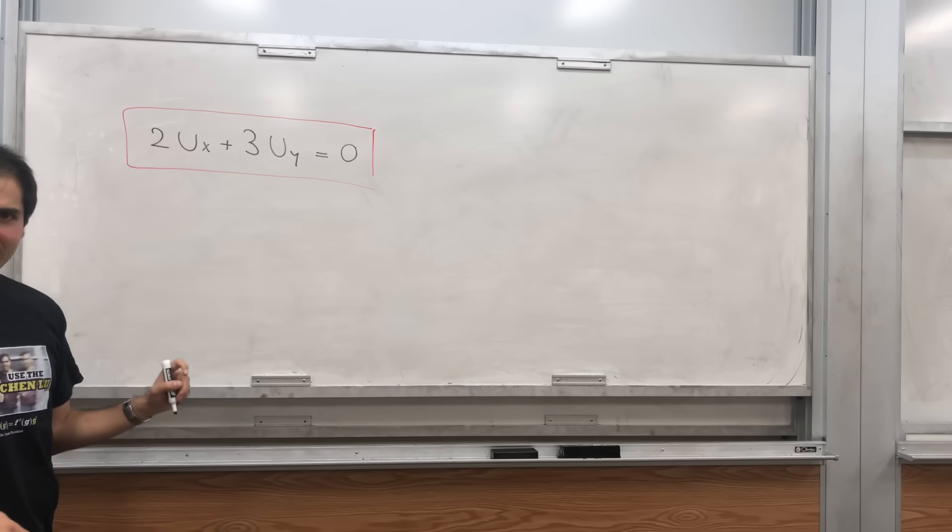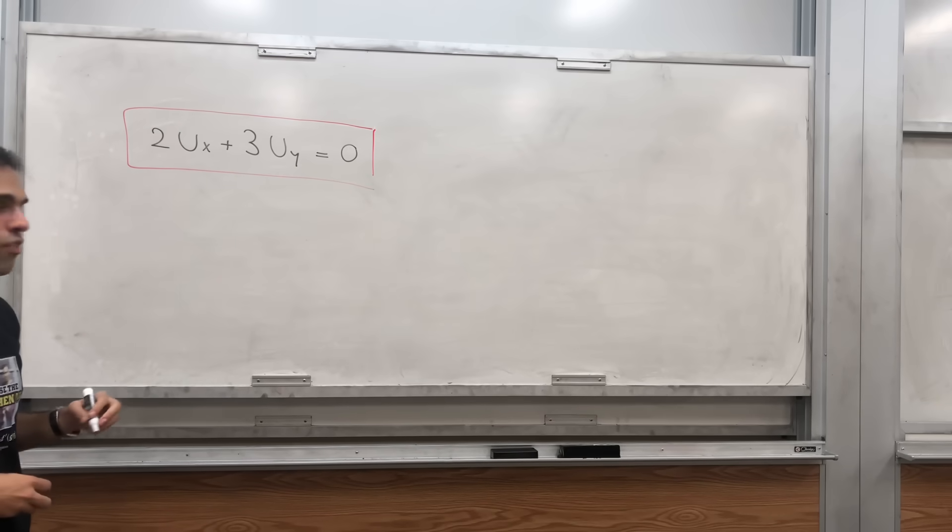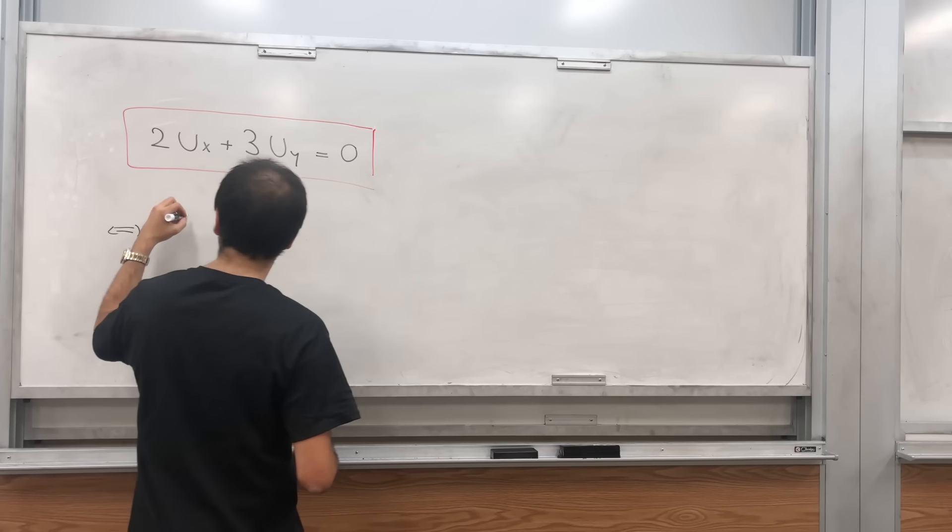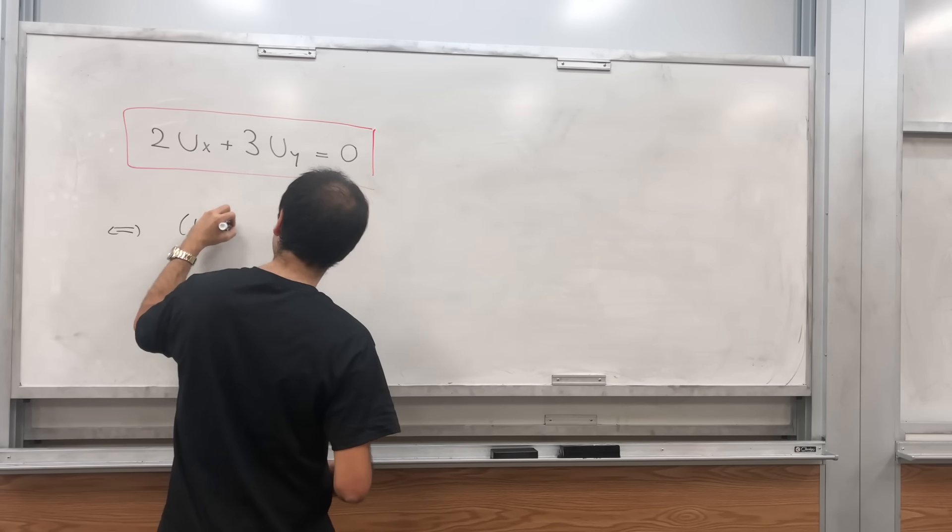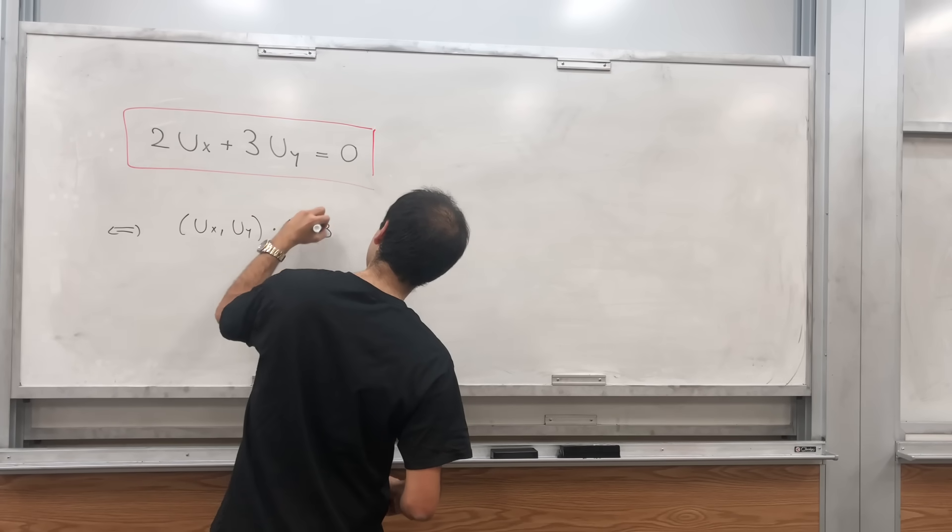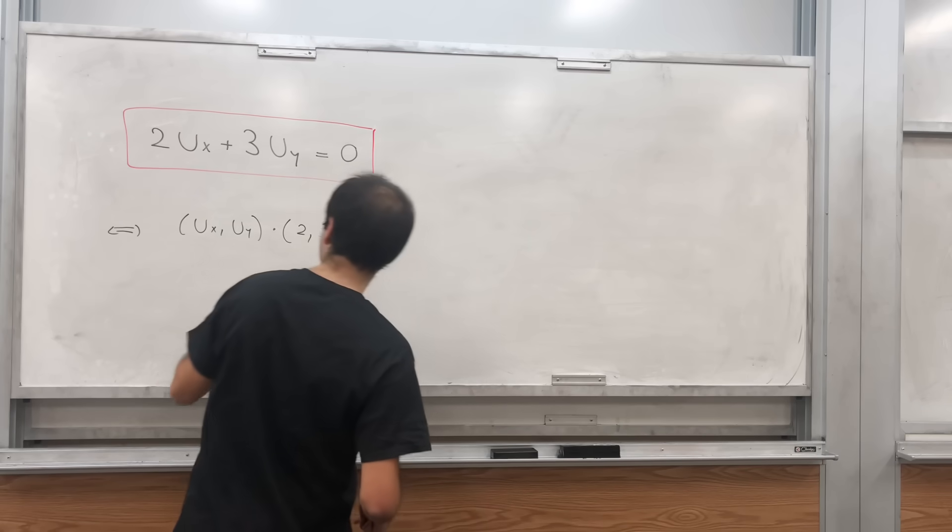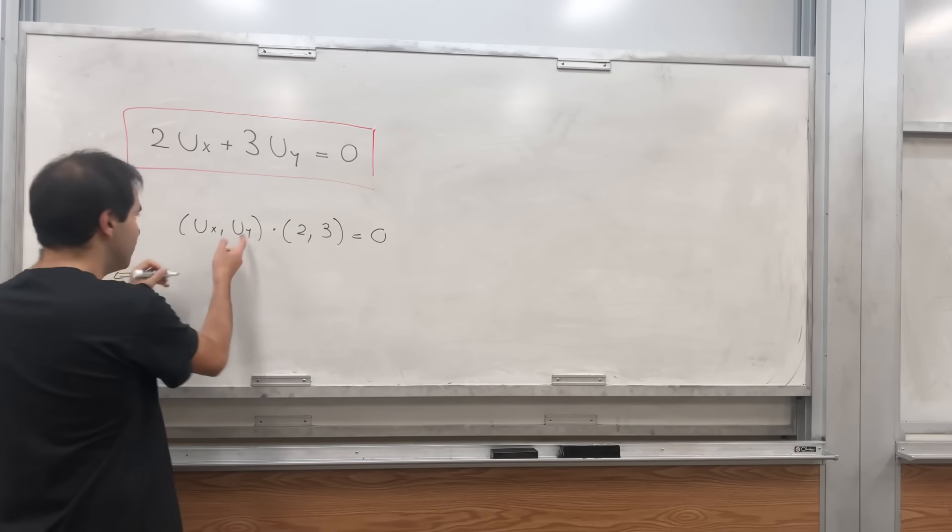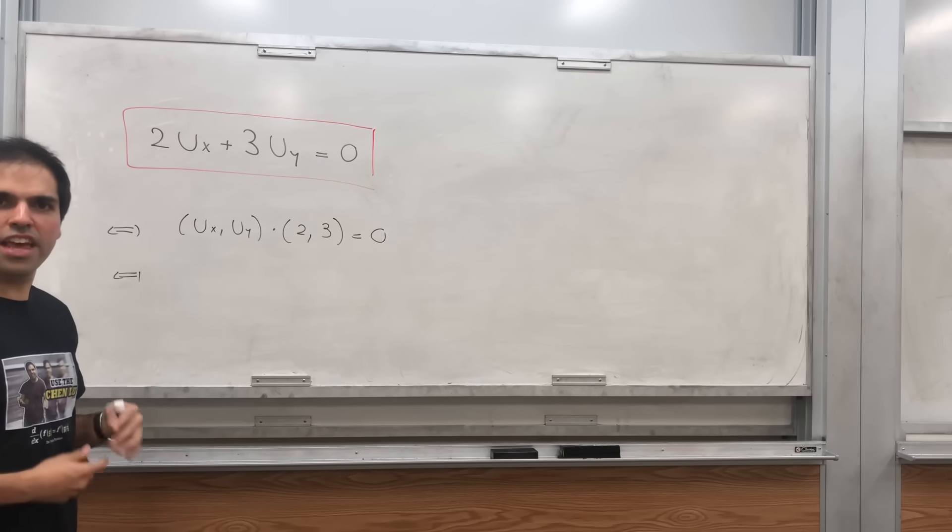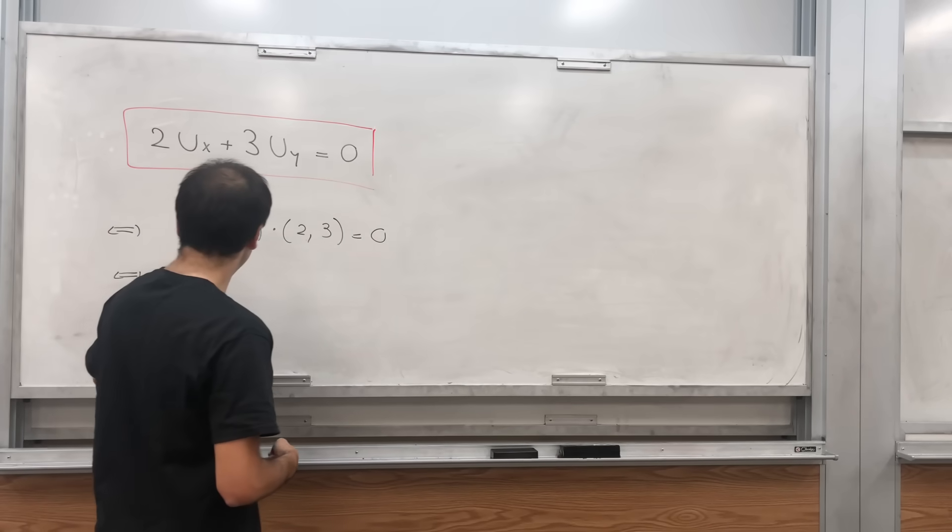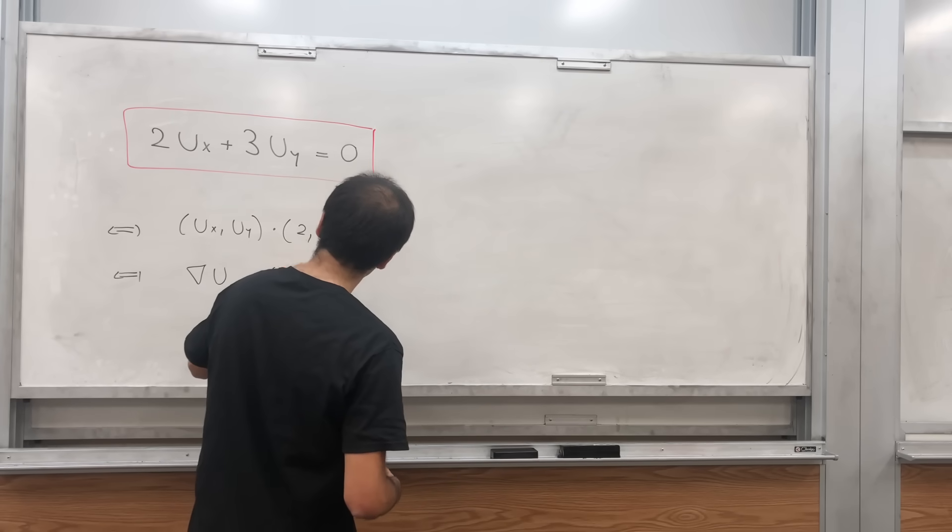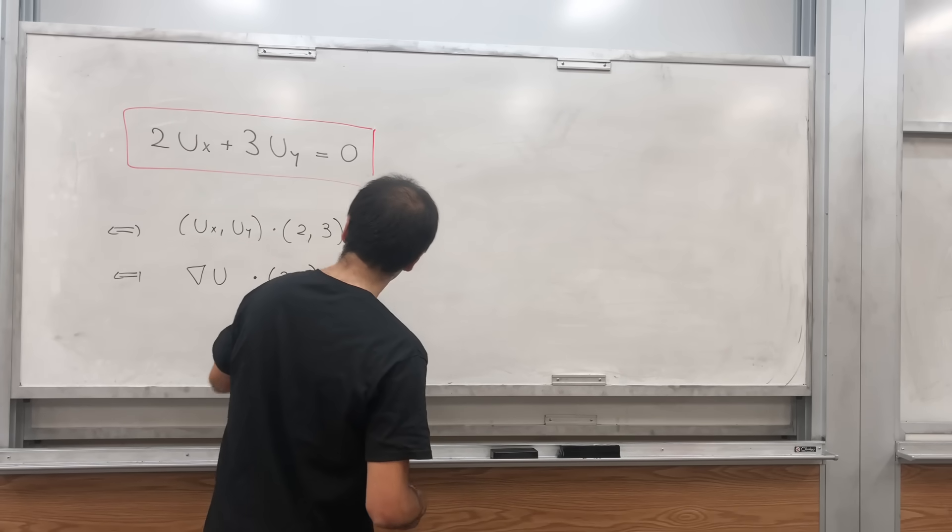Start with this equation. Notice that it's kind of a dot product. This is the same thing as saying that (ux, uy) dotted with the vector (2, 3) equals 0. And this vector of all derivatives, that's just another way of saying the gradient. So in other words, the gradient of u dotted with (2, 3) equals 0.